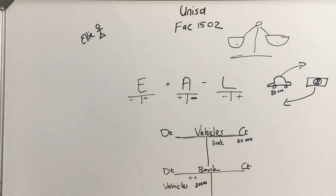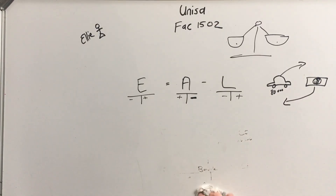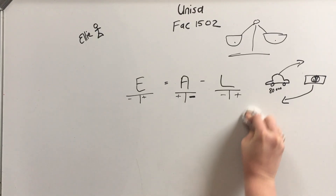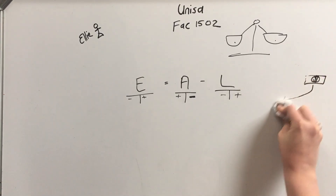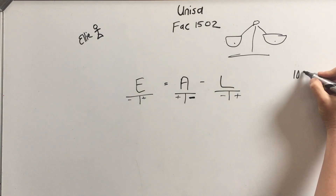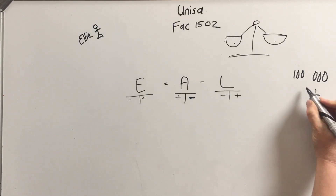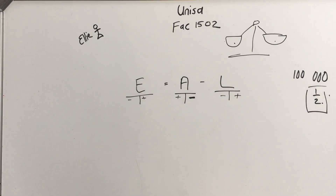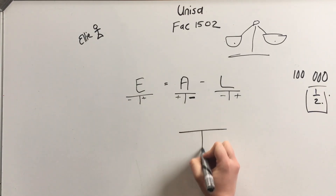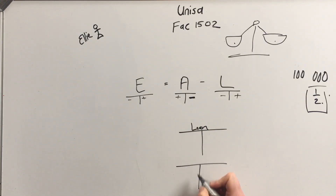That's the asset side. Now let's look at liabilities. A liability is something like a long-term loan. Let's assume we started a business and took out a long-term loan of 100,000 Rand, and we are now going to repay half of it — 50,000 Rand. The two accounts will be loan and bank.